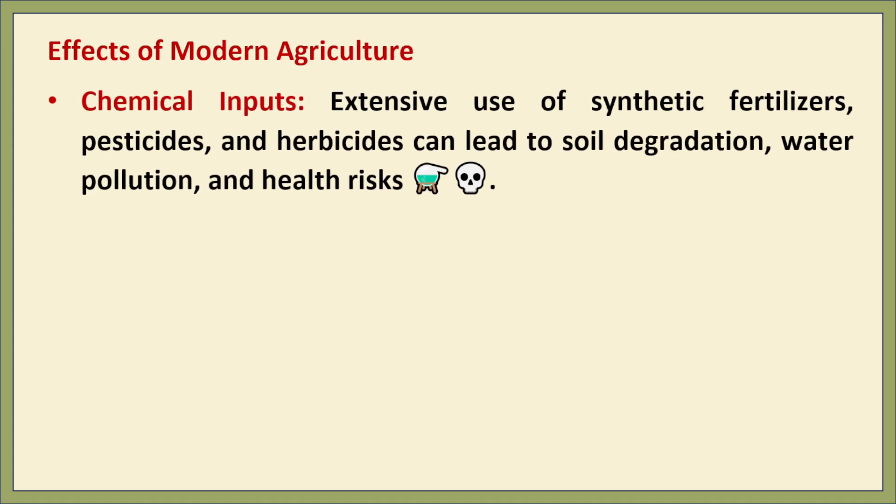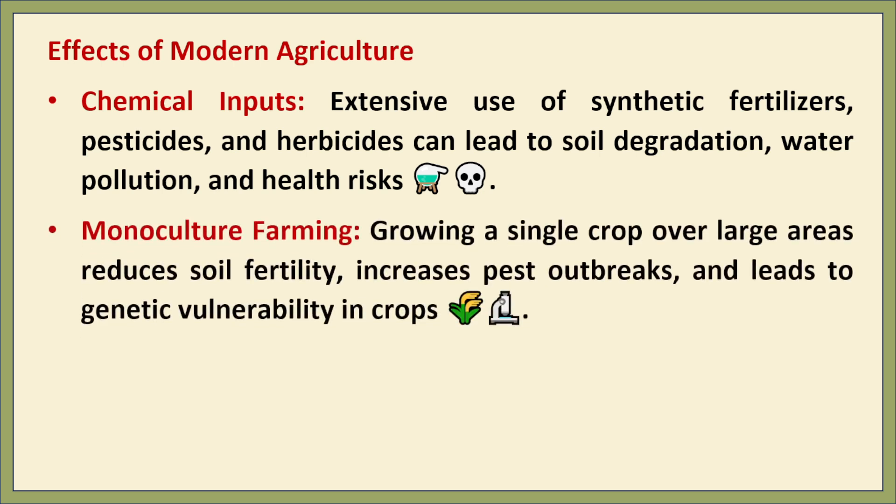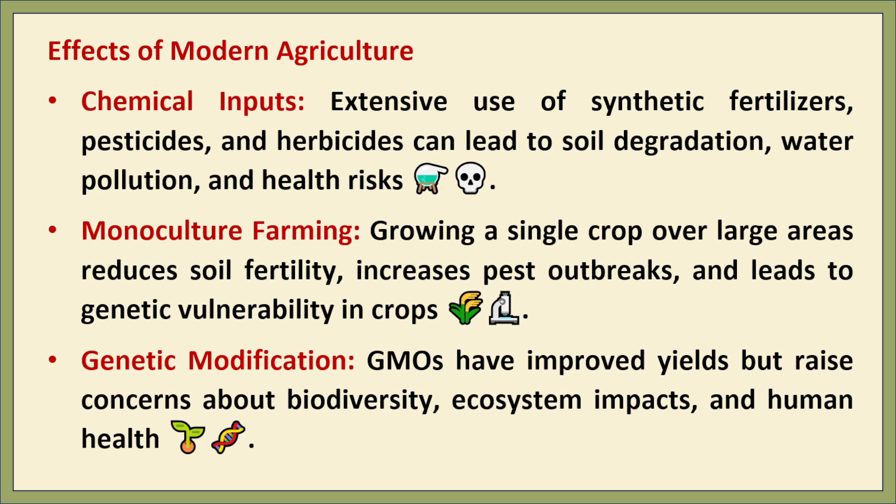Effects of modern agriculture. Modern agriculture has greatly increased food production, but it comes with serious side effects. Chemical inputs: farmers use large quantities of synthetic fertilizers, pesticides and herbicides to enhance crop yield; however, these chemicals can degrade soil quality, pollute water bodies and pose health risks to humans and wildlife. Monoculture farming — growing a single type of crop over large areas — may be efficient, but it depletes specific nutrients in the soil, increases pest and disease pressure and reduces biodiversity. Genetic modification: genetically modified crops are engineered for better yield and pest resistance, but there are concerns about their long-term effects on health, the environment and traditional farming practices.